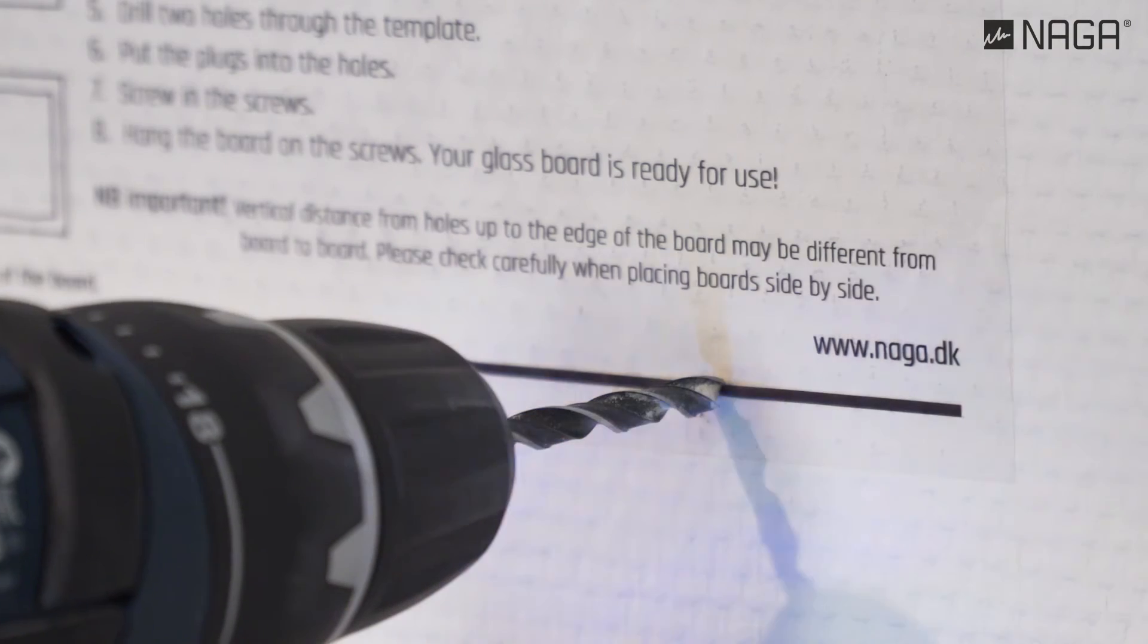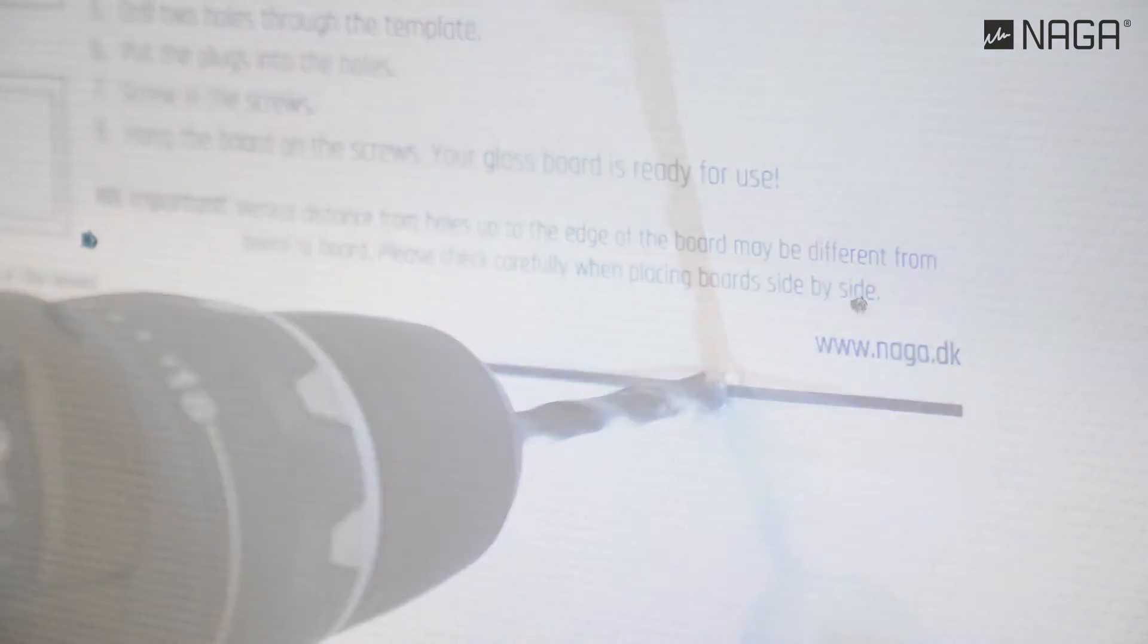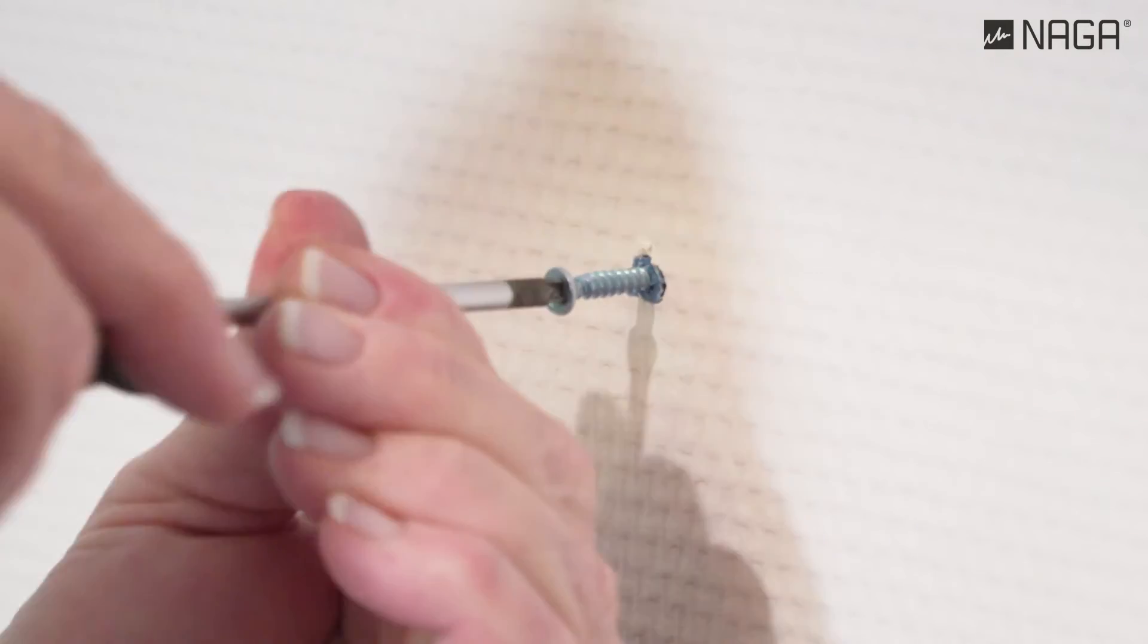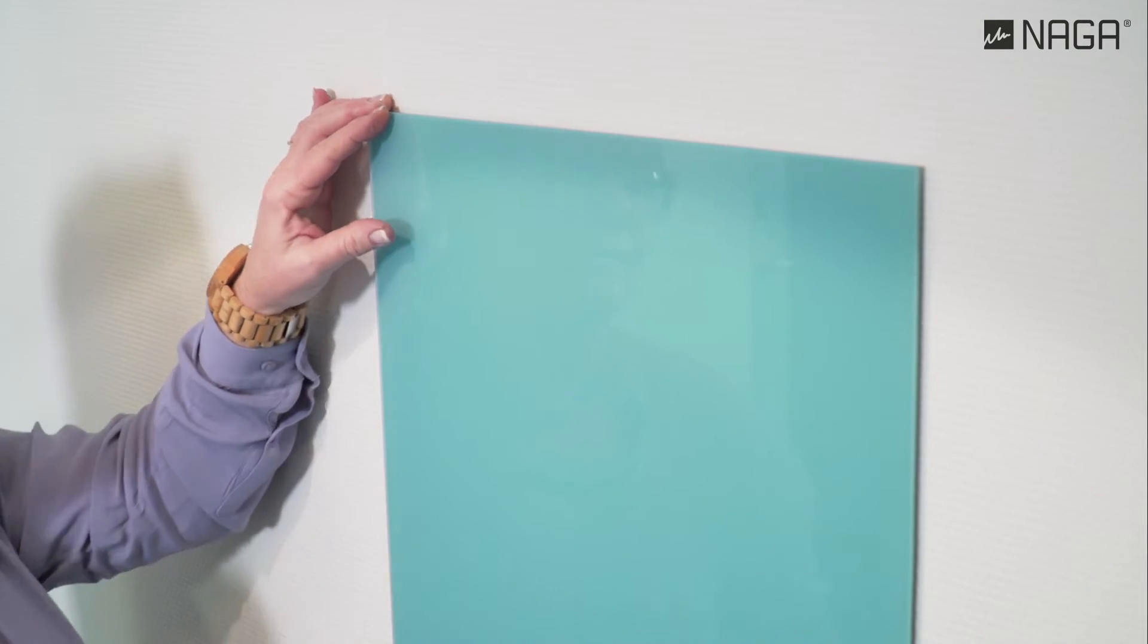Then drill the two holes marked on the template. Insert the plugs into the holes and fasten the screws. Finally, hang the glass board on the screws and it's ready for use.